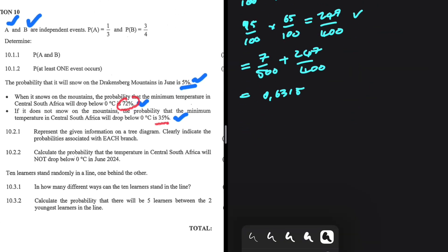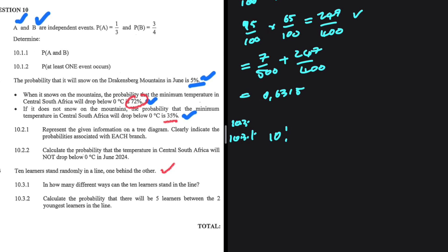Let's move ahead and do 10.3. We have 10 learners that randomly stand in a line, one behind the other. For 10.3.1, in how many different ways can 10 learners stand in the line? If we have 10 learners standing randomly, then we have 10 factorial ways in which they can stand. That is quite an easy one — one mark in the bag.